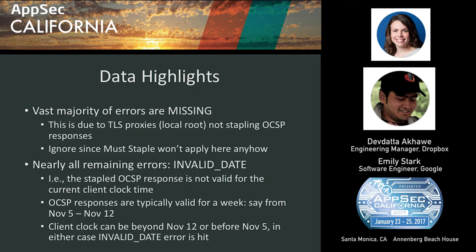When we started with the analysis, the vast majority of errors we saw were 'missing.' We believe these are due to TLS proxies — antivirus software or TLS proxies that people have installed with a local root. They intercept the Dropbox SSL connection at the proxy and have their own TLS connection with the user's browser. Since the user's browser is Chrome with the Expect Staple preload for Dropbox.com, it sees no OCSP response and reports 'missing.' We're confident this is TLS proxies because the certificate chain is missing in the uploaded report, indicating a local root.